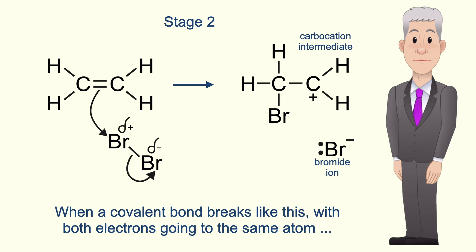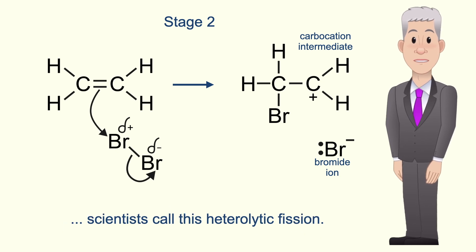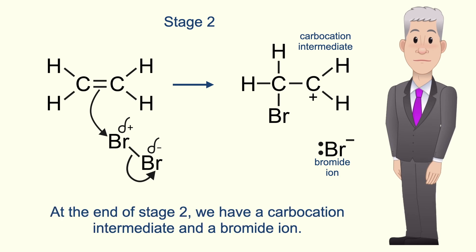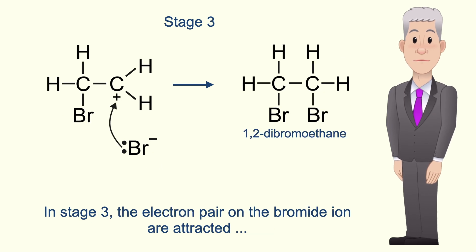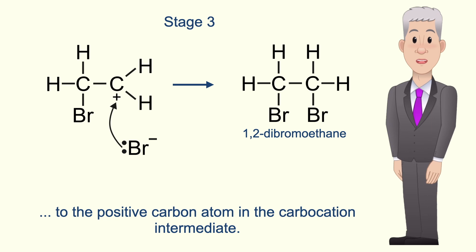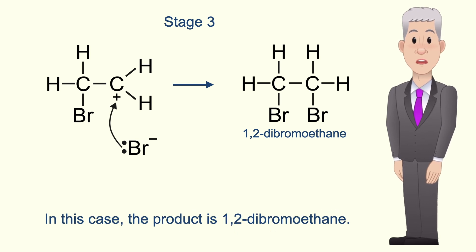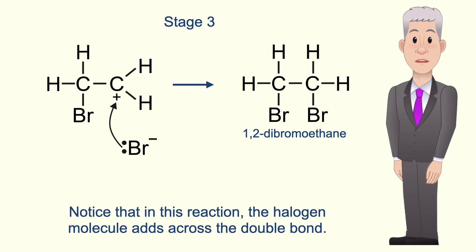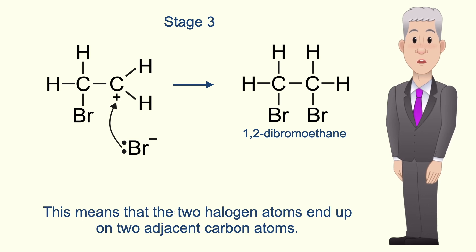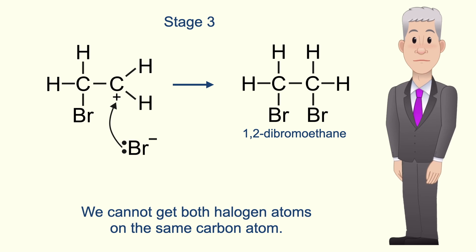When a covalent bond breaks like this, with both electrons going to the same atom, scientists call this heterolytic fission. At the end of stage two we've got a carbocation intermediate and a bromide ion. In stage three, the electron pair on the bromide ion are attracted to the positive carbon atom in the carbocation intermediate. This electron pair now forms a covalent bond and we have our final product — in this case, 1,2-dibromoethane. Notice that the halogen molecule adds across the double bond, so the two halogen atoms end up on two adjacent carbon atoms; we cannot get both halogen atoms on the same carbon atom.